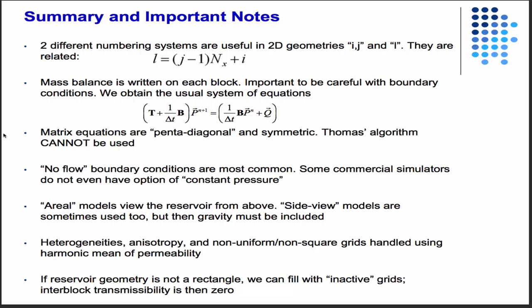So then again, in the codes we're going to write, your midterm project is going to be to write a 2D heterogeneous, non-isotropic, non-uniform grid reservoir simulator. But we will have the aerial view, so we're not going to include the effects of gravity. And again, the last thing is, if your reservoir is not a rectangle, you can fill it with inactive grids. So these are grids that are outside the boundary that you would just set the permeability to zero, compute the interblock transmissibility according to the harmonic mean, and you need to get no transfer or no flow along the outside.